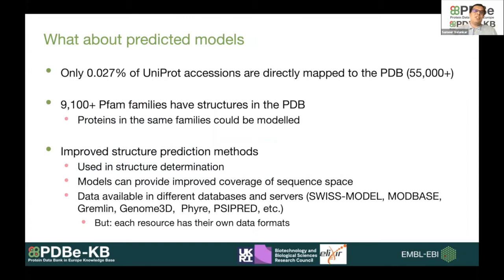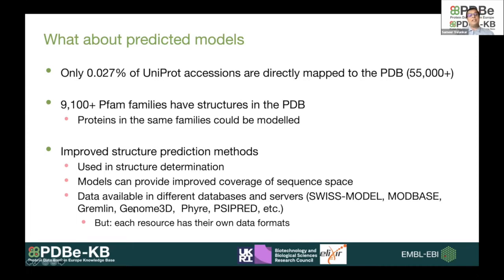Looking at the PDB, we have a very small number of UniProt accessions represented — currently about 55,000 unique UniProt accessions spanning about 9,000 PFAM families, but there are many more. As we have seen in the past couple of years, structure prediction methods are becoming better and better and are now used regularly in structure determination. Predicted models can provide improved coverage of sequence space. However, different resources have their own APIs and data formats, which motivated establishing 3D Beacons.